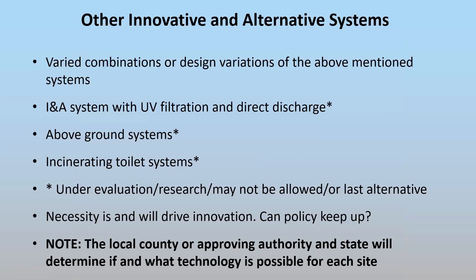Other systems to consider include various combinations of the technologies already described. There could also be instances where an INA system uses UV filtration to kill viruses and bacteria, followed by direct discharge into a ditch or similar channel. Direct discharge is how wastewater treatment plants operate — they treat the water through various means and then discharge it directly into streams or rivers, or in some cases, land-apply the wastewater.